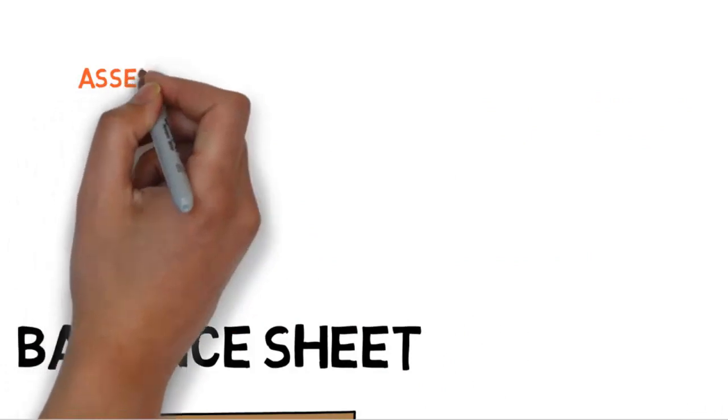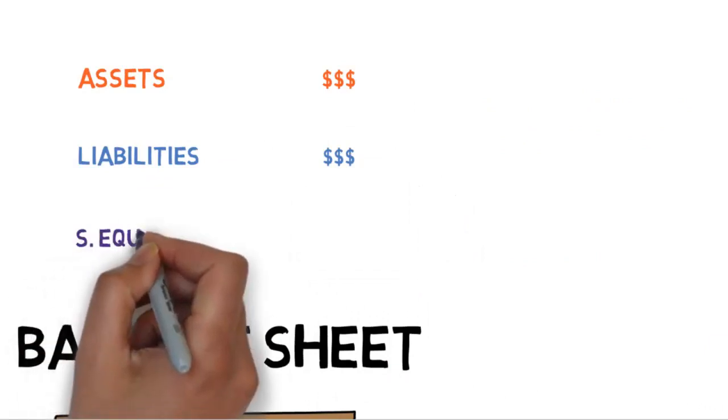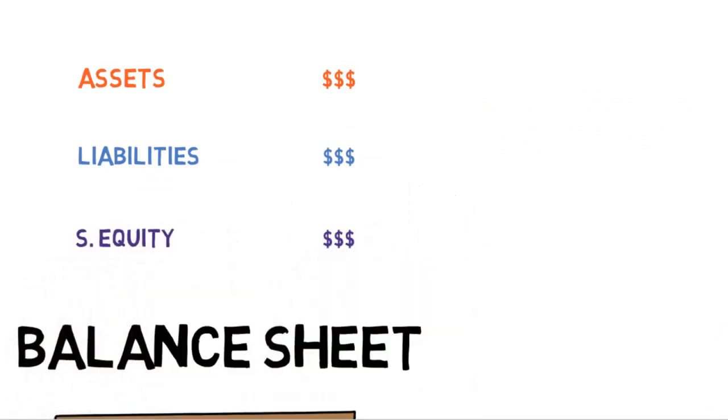The balance sheet is the same as the accounting equation. Basically, assets equal liabilities plus stockholders' equity. We will take a closer look at these in the following lessons.